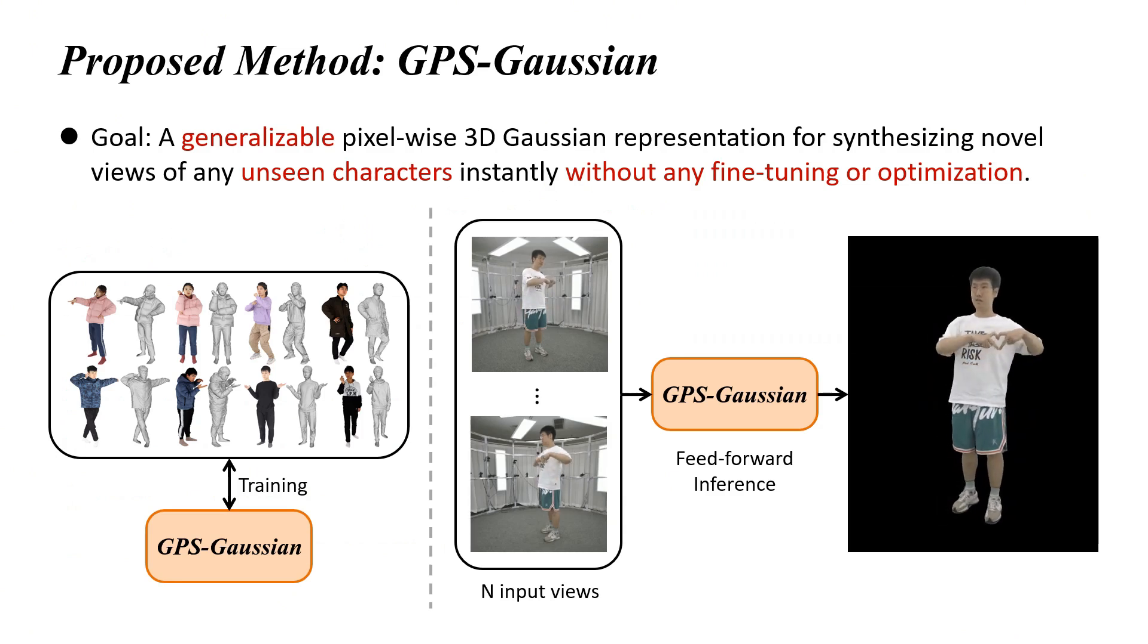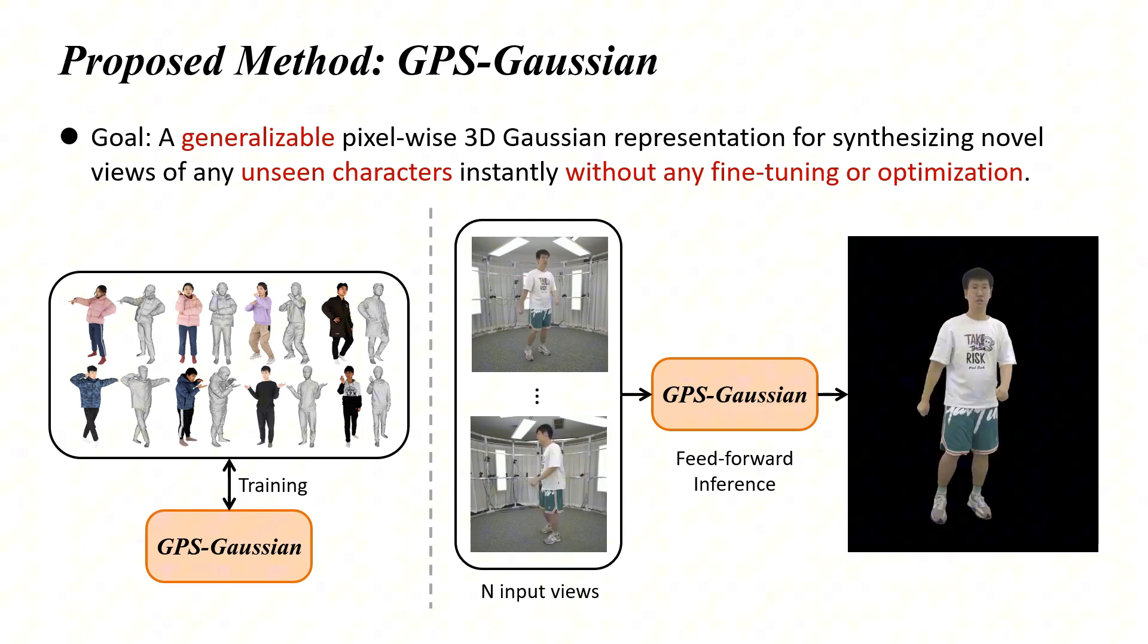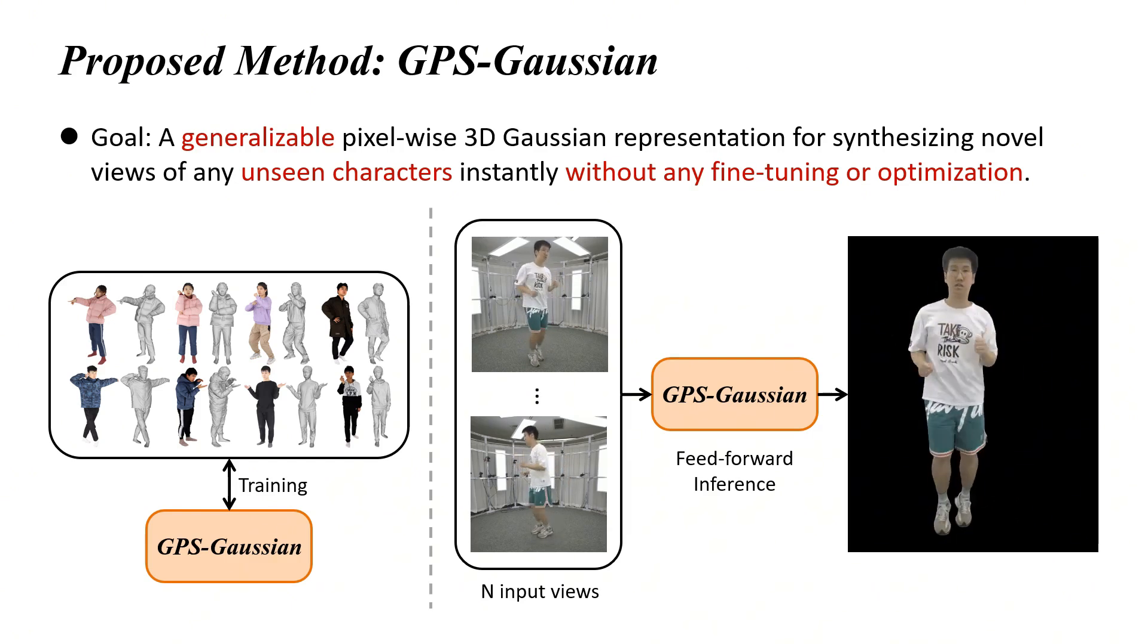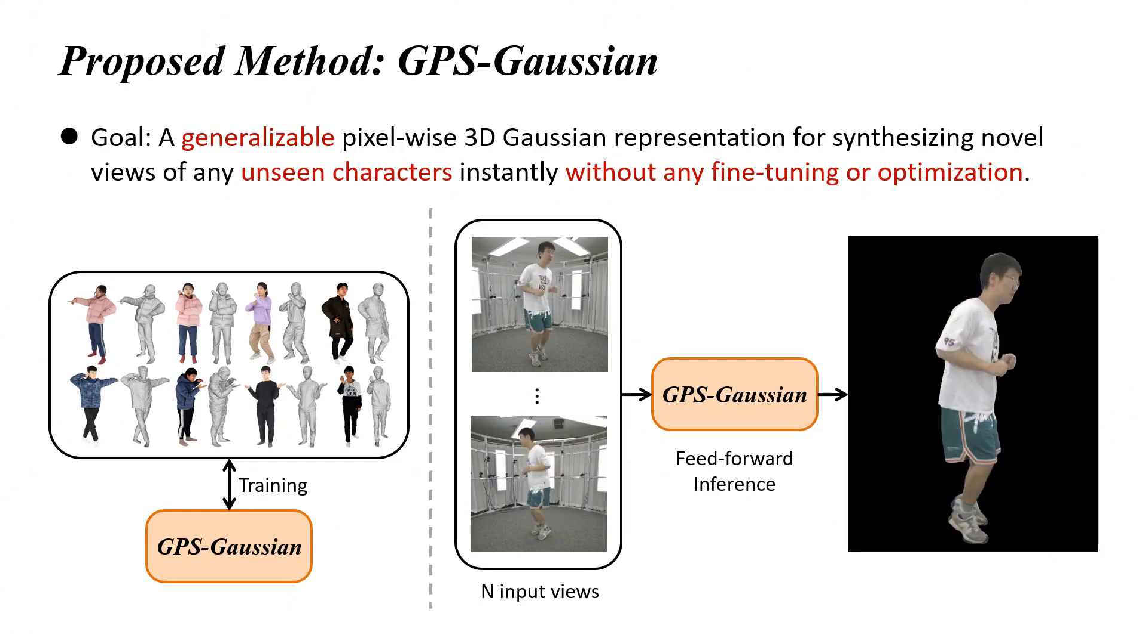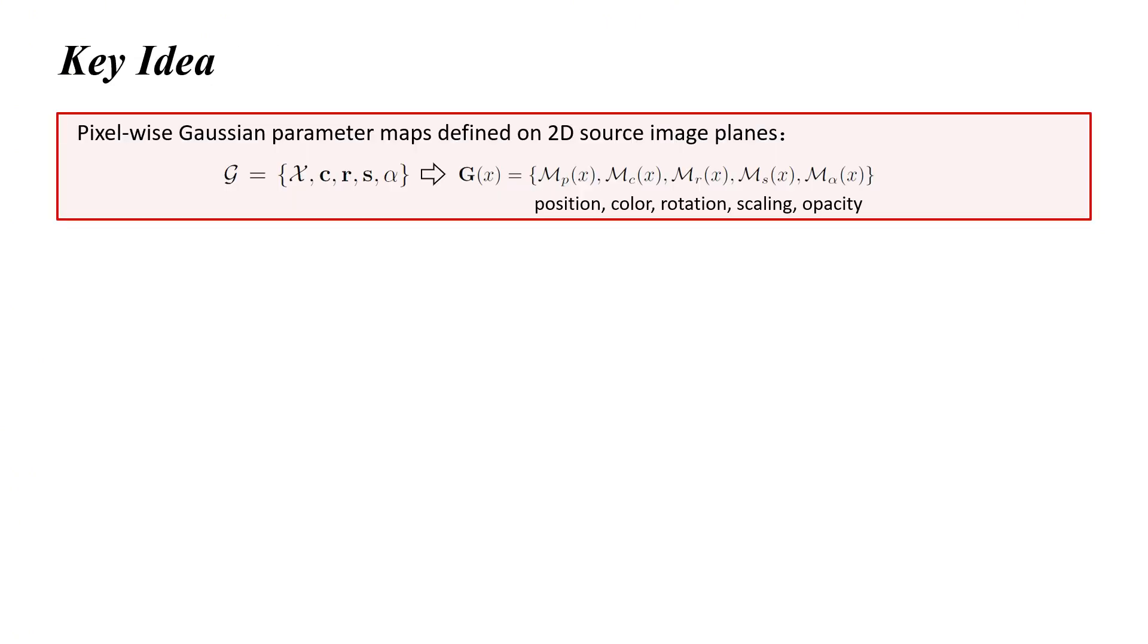In this paper, we propose GPS Gaussian, a generalizable pixel-wise 3D Gaussian representation for synthesizing novel views of any unseen characters instantly without any fine-tuning or optimization. After training on massive 3D human scans, our method feedforwardly infers Gaussian parameters with the learned human priors.